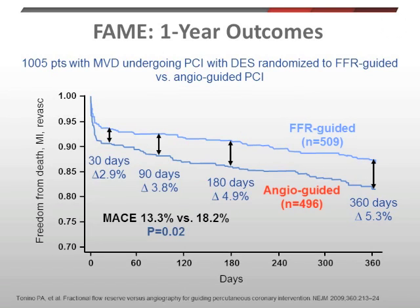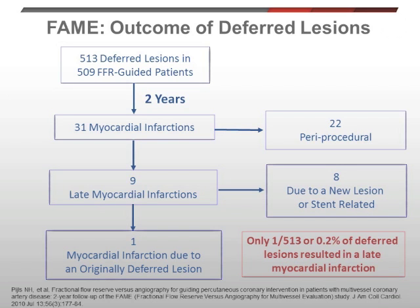When we further assess the outcomes of those lesions deferred in the approximately 500 patients who had FFR assessment, we find that 513 lesions were not significant by FFR and thus did not undergo PCI. At two years, there were 31 MIs in that group — 22 were periprocedural from other lesions treated during the same procedure. Of the nine late MIs that occurred, eight were due to either a new lesion or to the stent that was implanted. So there was only one MI attributable to an originally deferred lesion, giving an event rate of 0.2% — obviously very favorable in terms of long-term outcomes.